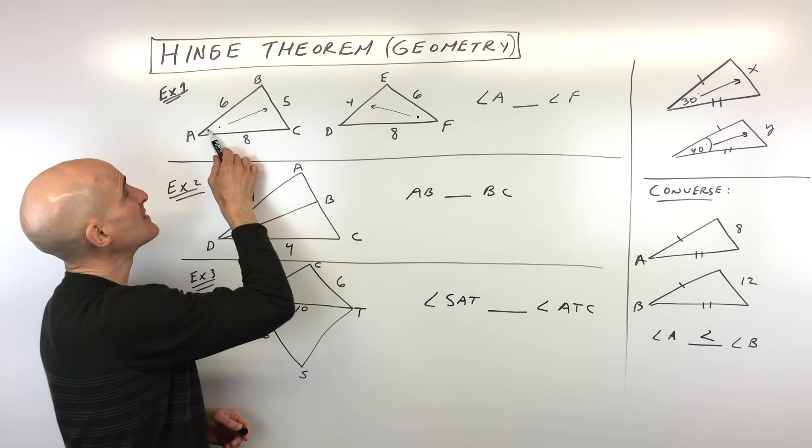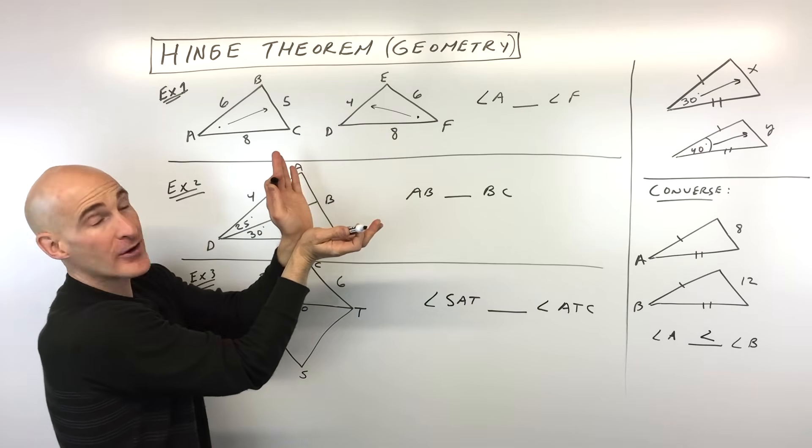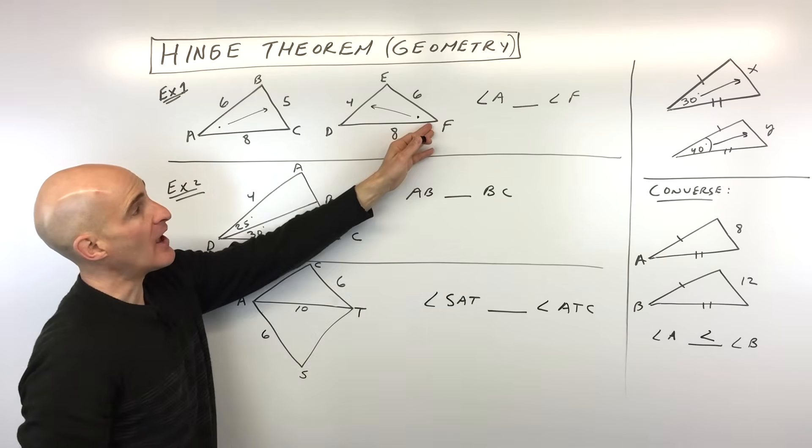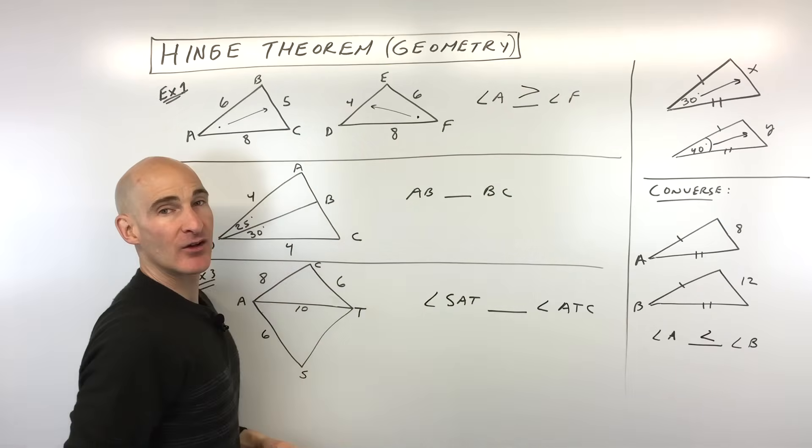And what do you notice here? You've got 5 versus 4. 5 is greater than 4. That means that angle A must be opening up wider, right, than angle F. So here we have angle A is greater than angle F.